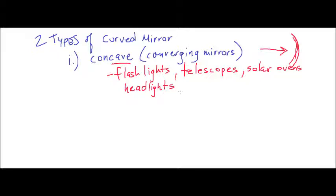A compact mirror is another example — the kind people use to check their makeup. The concave shape allows the object to appear enlarged, so you can see a lot more detail using these mirrors.